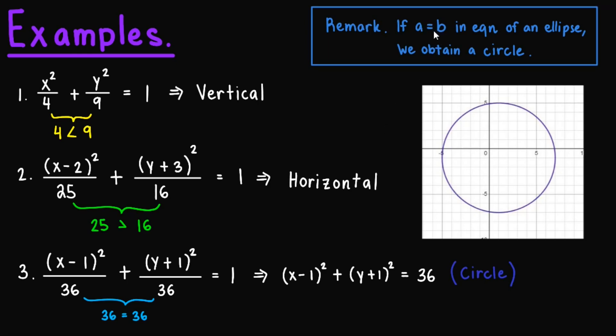So as a remark: if a is equal to b in the equation of an ellipse, we obtain a circle. As you can see, there are connections between each conic section — in this case, a connection between the ellipse and the circle. By just some tweaking of the values in the equation, we'll be able to convert one to another. That's a good insight we can obtain from this.